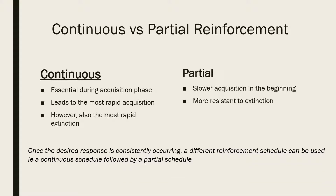Schedules can also be changed during the learning process, once the desired response is consistently occurring. For example, a continuous schedule may be used initially during the acquisition phase, after which a partial schedule will be adopted in order to make the desired response more resistant to extinction.